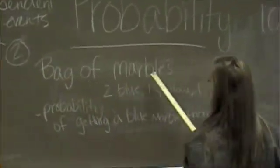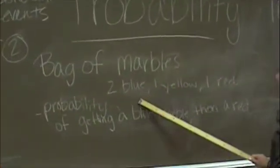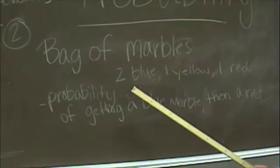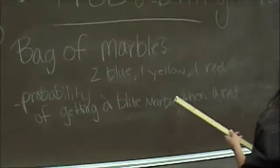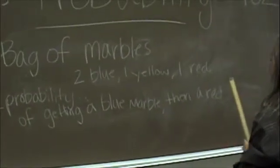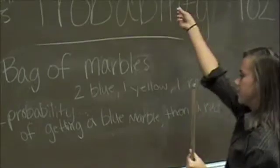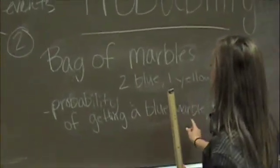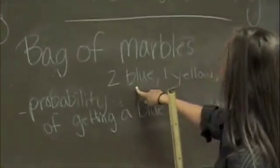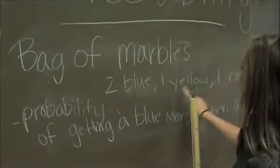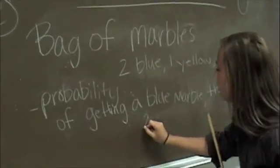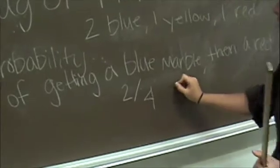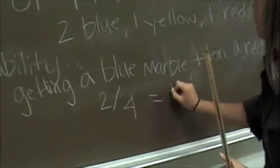If you have a bag of marbles, and there's two blue, one yellow, and one red, we're going to figure out the probability of getting a blue marble, then a red marble. So first, we have to find the probability of getting a blue marble. Since there are two blue and there are four total, it would be 2 out of 4, which would also equal 1 half.